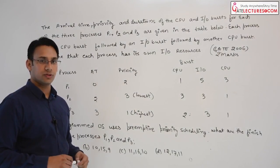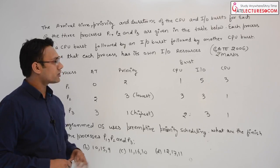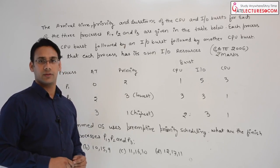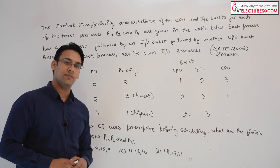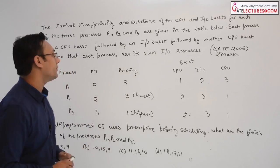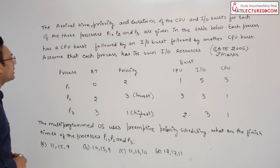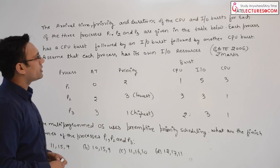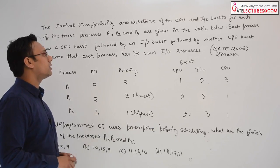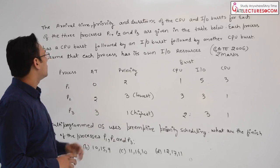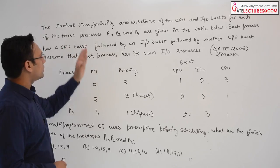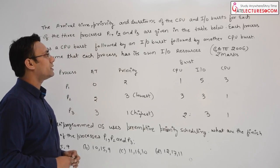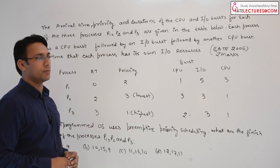Let us do this question. It was asked in GATE 2006 and it was a two-mark question. They are saying the arrival time, priority, and duration of the CPU and IO burst for each of the three processes P1, P2, and P3 are given in the table below.